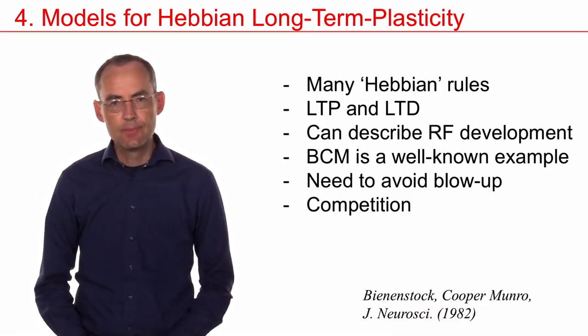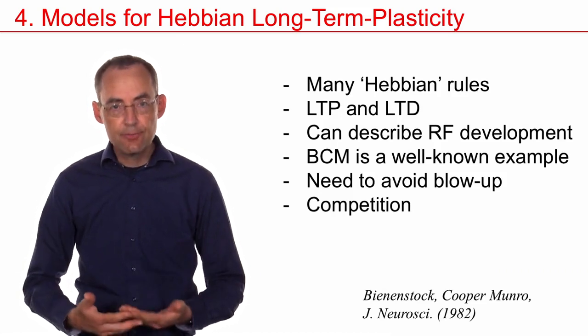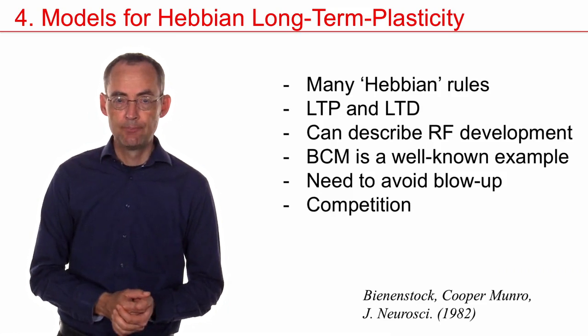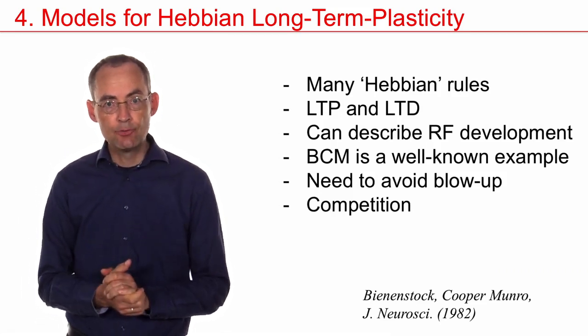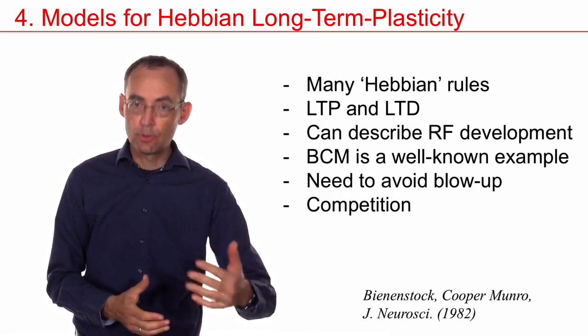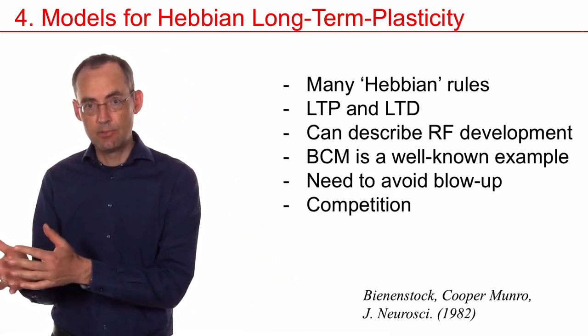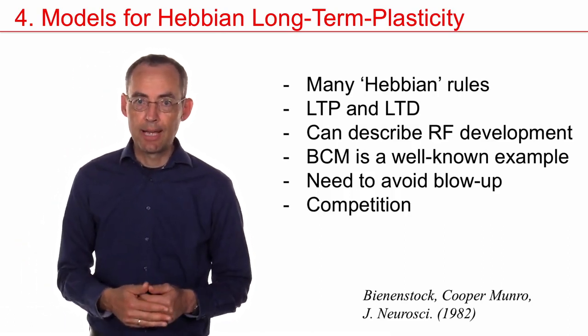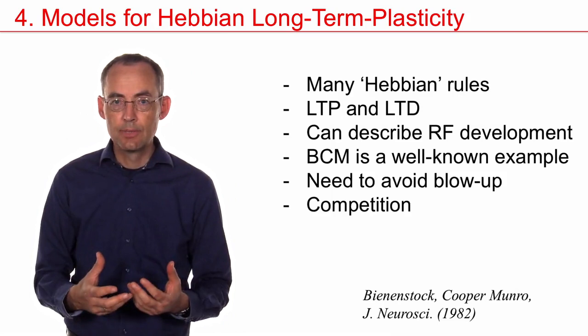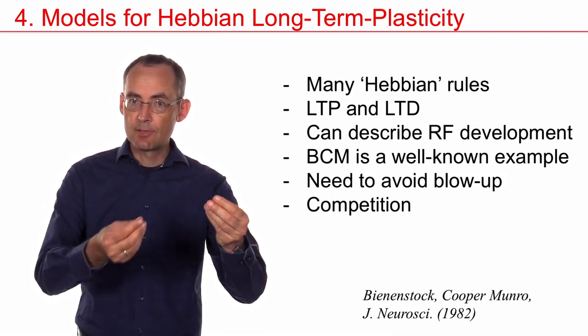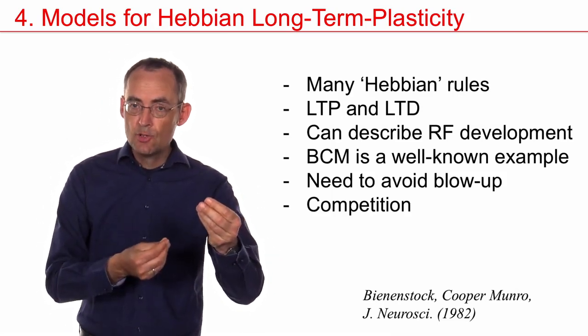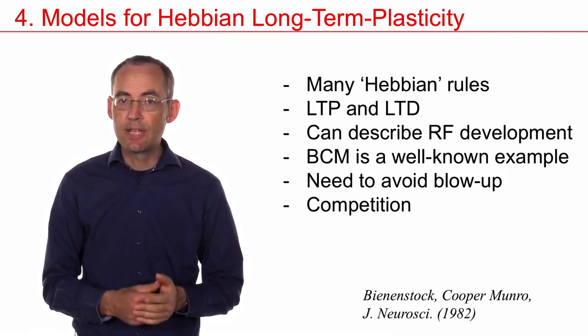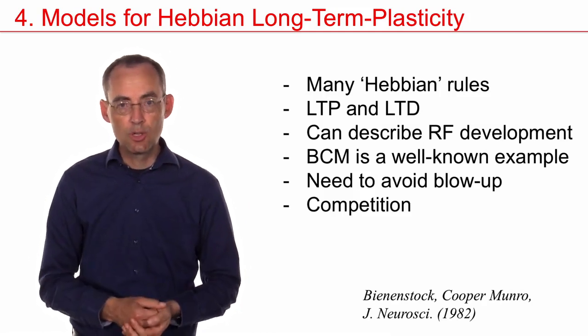So what we have seen is that there are many different Hebbian learning rules. There's not just one rule there's a family of Hebbian learning rules. And good Hebbian learning rules have to account for an increase of weights long-term potentiation and for a decrease of weights long-term depression. If the learning rule is well balanced it leads to a competition. Some synapses grow at the expense of other synapses so that in the end the neuron becomes specialized and that means it can for example develop localized receptive fields.